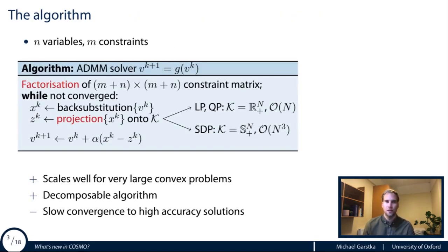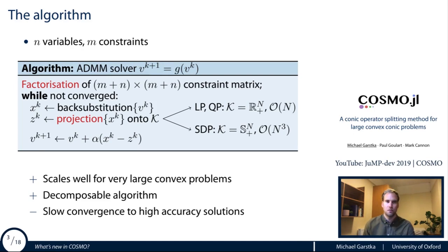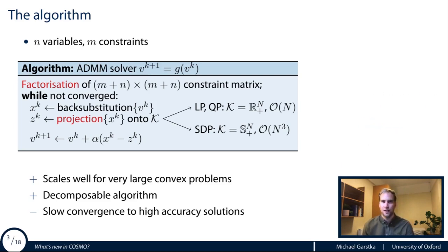I want to briefly talk about the algorithm used inside our solver. We're using the Alternating Direction Method of Multipliers, or ADMM. For the purpose of this talk you can think of this algorithm as a black box function g that takes a solution estimate vector v, performs some operations, and returns a new vector v_{k+1}. When you set up the problem, the first thing done is a factorization step of a constraint matrix of dimension M plus M, performed once at the beginning.